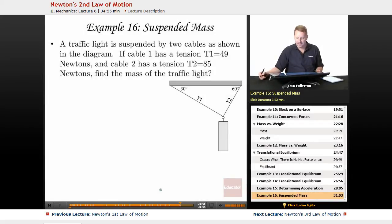Talk about a suspended mass. In this case, we've got a traffic light suspended by two cables as shown and we'll label them T1 and T2. We've measured the tension in the cables using a spring scale and we found that T1 is 49 newtons and T2 is 85 newtons. Can we find the mass of the traffic light?